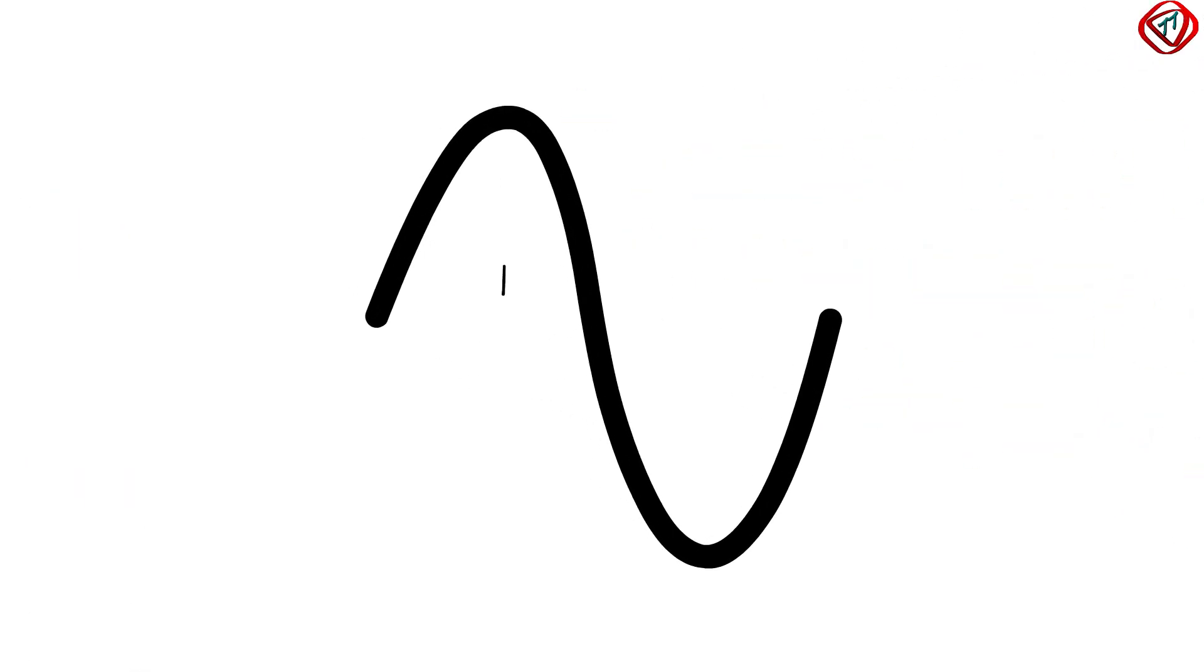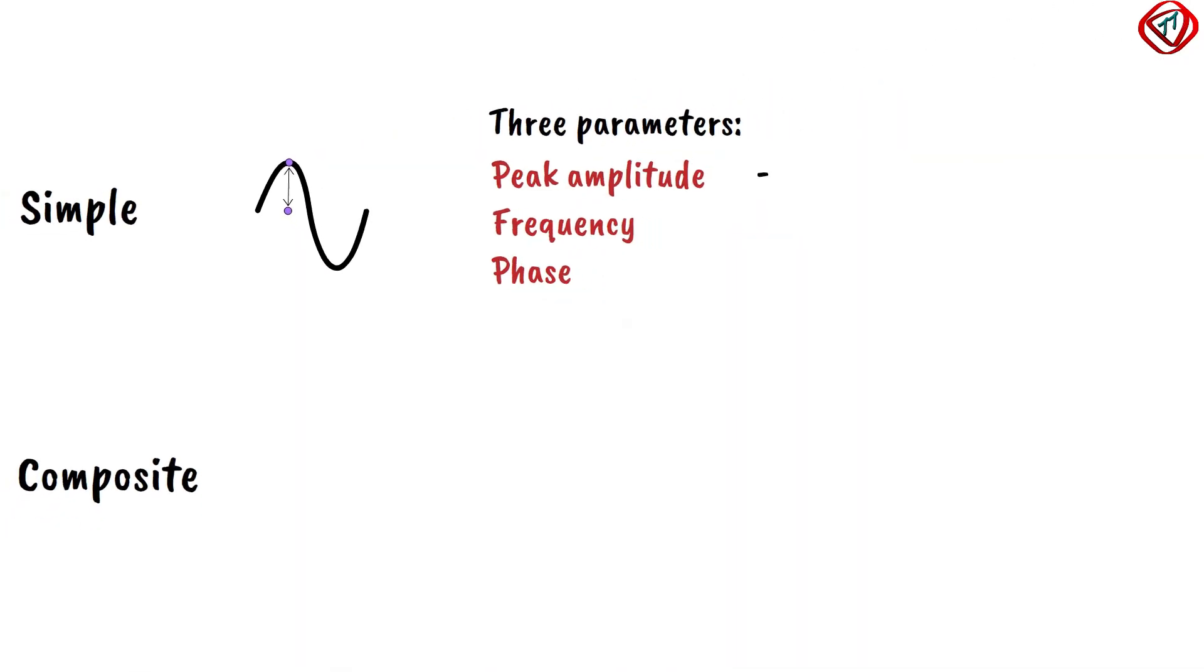Peak amplitude is the distance between the point of highest intensity and the point of zero intensity. It is root two times of its RMS value. RMS is the root mean square value.